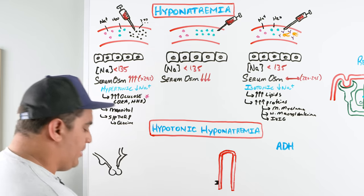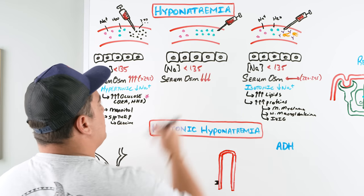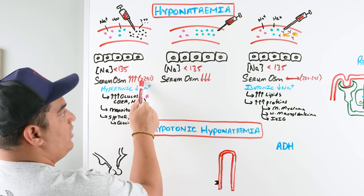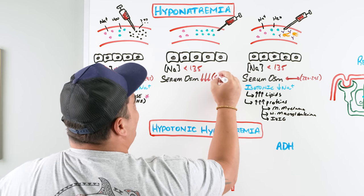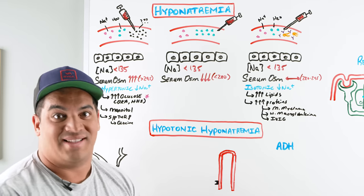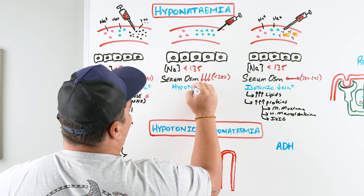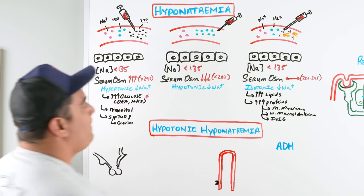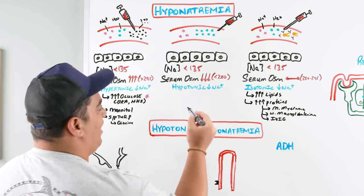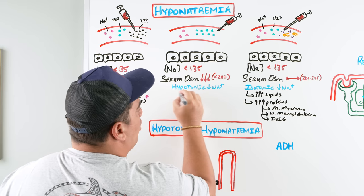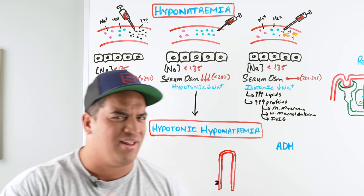Now, if the serum osmolality comes back less than 280, that is a true hypotonic hyponatremia — this is where the money is, and where we'll focus most of our lecture. Once we've confirmed the patient has a hypotonic hyponatremia, we move on to the next diagnostic test.